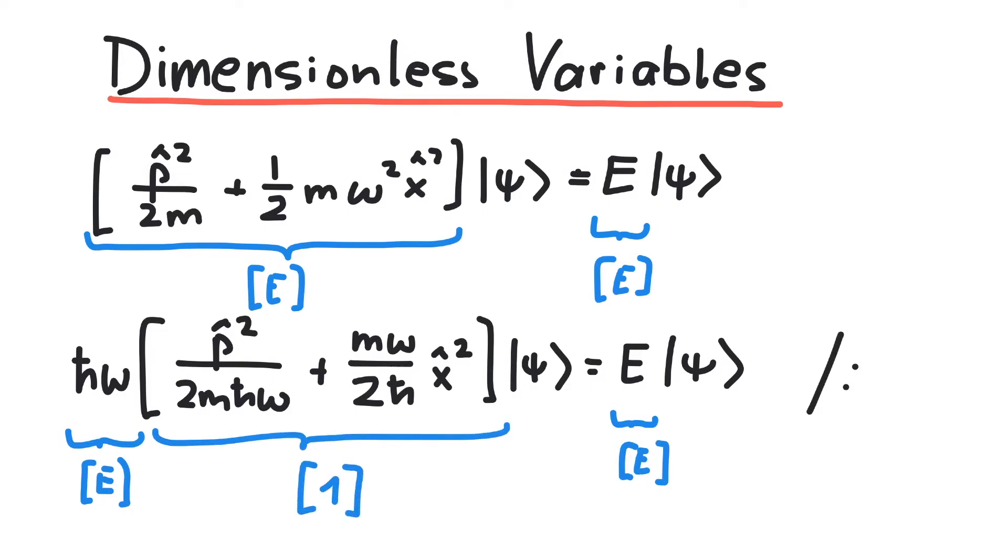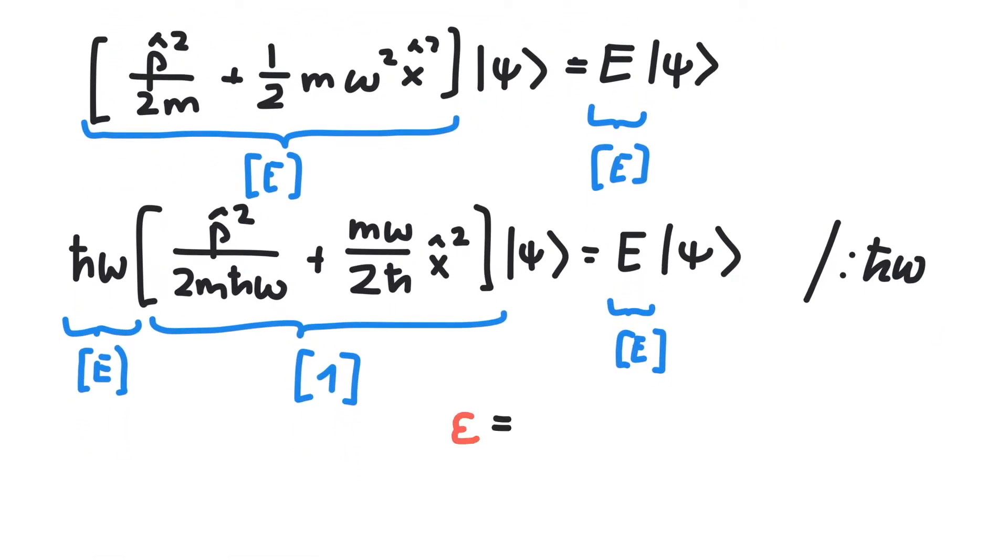Now we divide by h-bar omega and define our first dimensionless quantity, epsilon. Epsilon is a number without units. For instance, if epsilon were, say, 1, the energy eigenvalue would be 1 times our scale of h-bar omega.